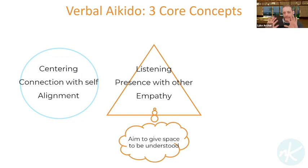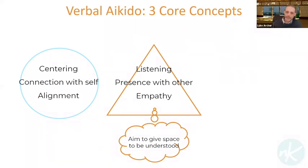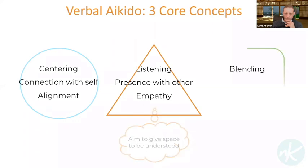Just imagine that physical aikido move of going towards the other person, stepping behind them — if you step behind a person you can see in the same direction as them. And the third step we're going to look at today is blending.